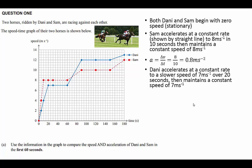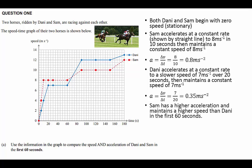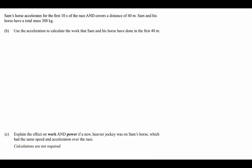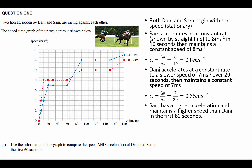Danny accelerates at a constant rate to only 7 meters per second and takes 20 seconds to do so. So our calculation for acceleration is the change in velocity of 7 divided by a change in time of 20 seconds giving us 0.35 meters per second squared. Sam has a higher acceleration and maintains a higher speed than Danny in the first 60 seconds and so that's our summary statement.